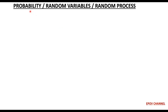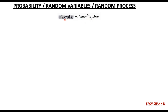Welcome to this lecture series on probability, random variables, and random processes. As we have seen, signals used in communication systems are basically of two types.